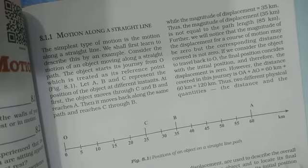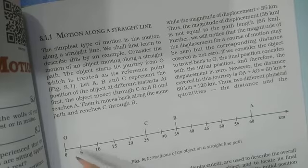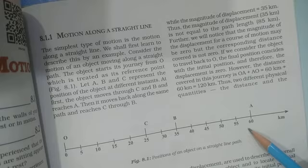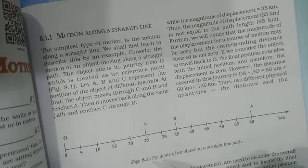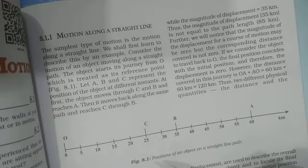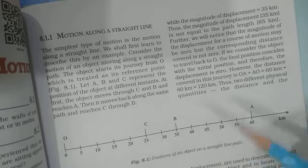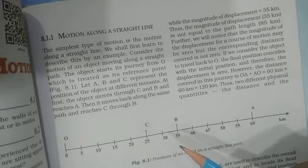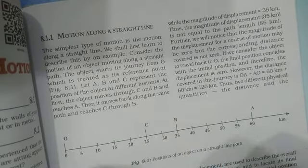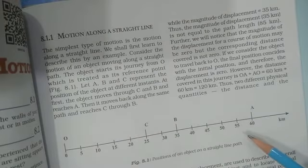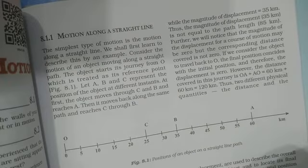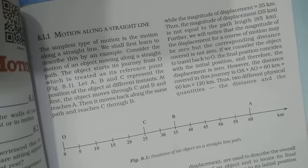First of all, what do you mean by distance? Distance is the total length covered by an object. If we talk about displacement, it is distance with direction. Distance is a scalar quantity because no direction is required. Displacement requires direction, so displacement is a vector. Distance is the total distance covered by an object, but displacement is the shortest distance covered by an object from the initial position to the final position.